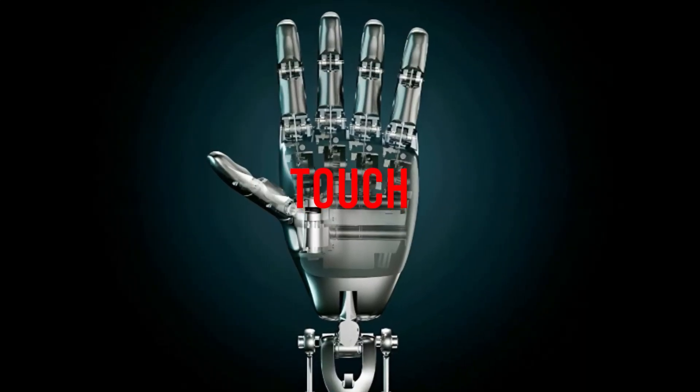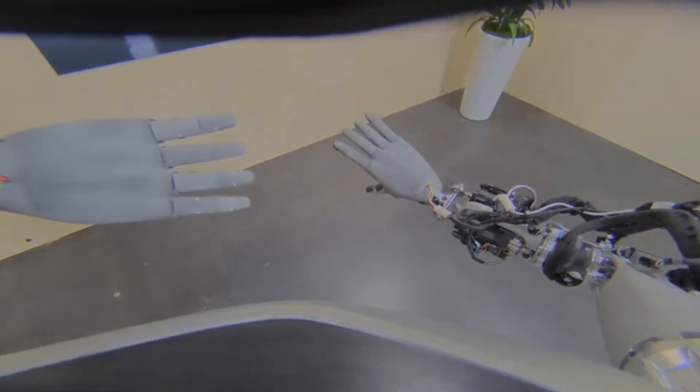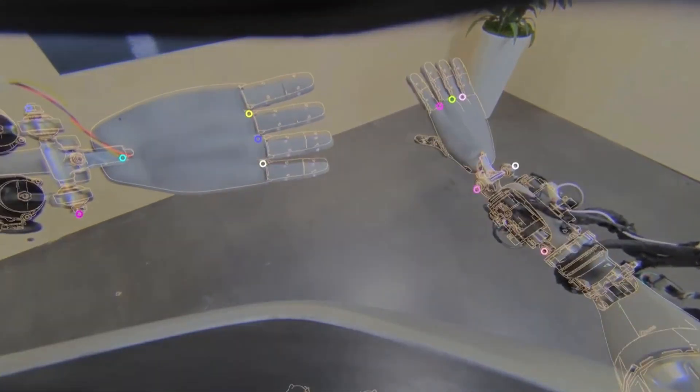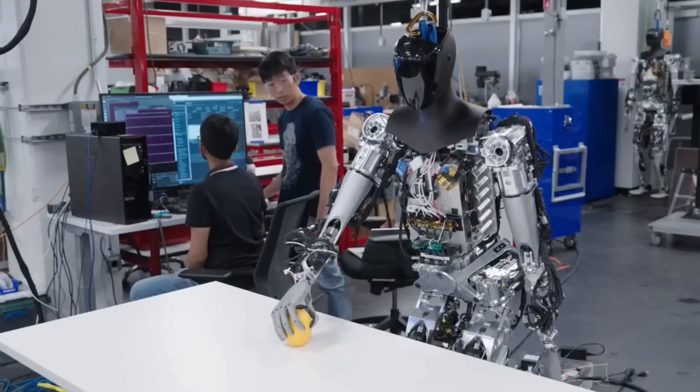Touch: Optimus has sensors on its hands that provide it with touch. It can manipulate objects with precision and skill. It can also be gentle enough not to break an egg shell, demonstrating impressive torque control skills.